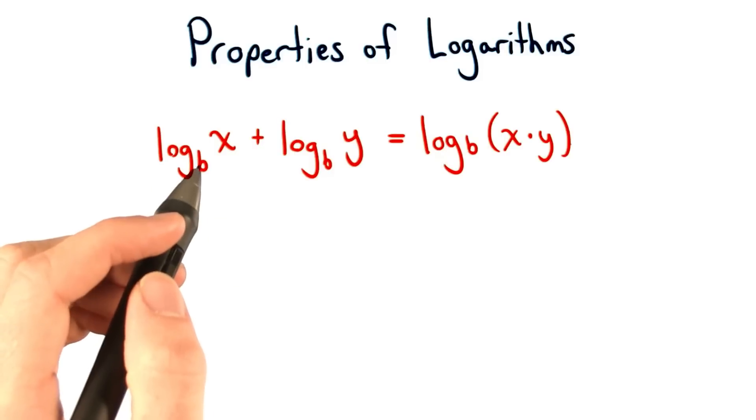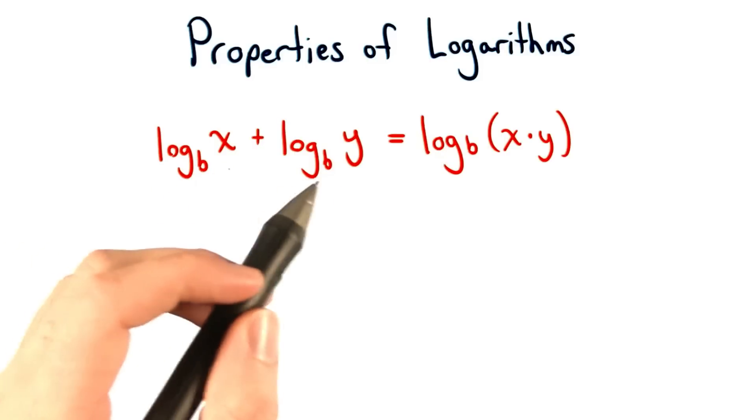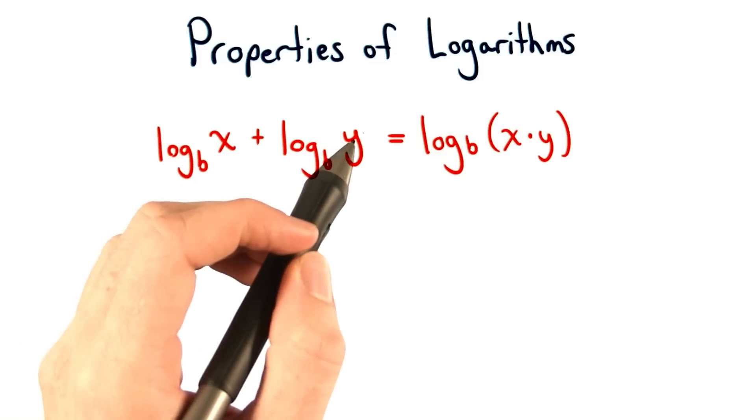The first property states that if we add two logarithms together that have the same base, then we can just multiply the numbers together.